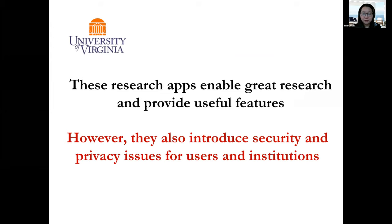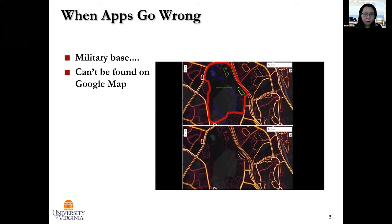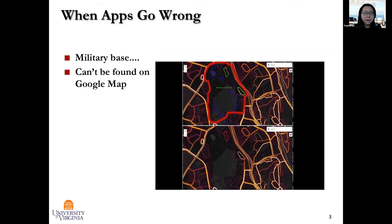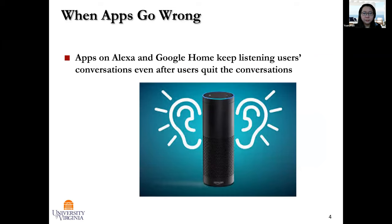However, they also introduce security and privacy issues for users and institutions. It could really go horribly wrong if a research app goes wrong. In November 2017, there was a mobile app trying to release a heat map of people who exercise. But accidentally, it disclosed a military base in Singapore that could not be found on Google Maps. Soldiers were jogging around the military base with fitness tracking devices and apps, and this mobile app that was just trying to display how active people are actually disclosed the location of a military base.